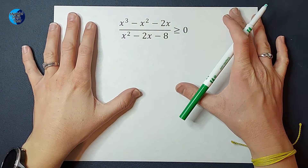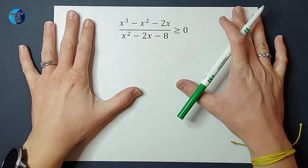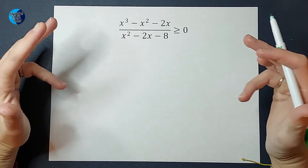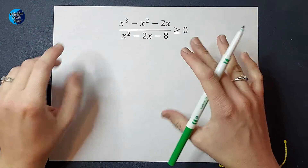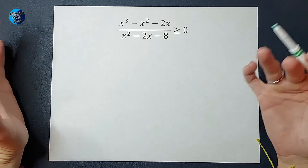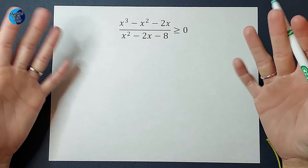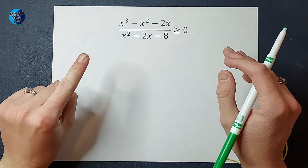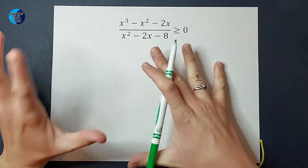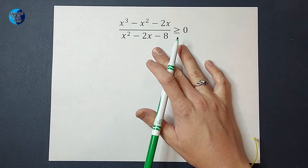Hey guys, we are going to solve this rational inequality. As we solve this, I'm going to give you some pretty specific steps to follow. You might be thinking you can do it but don't really get why it gives you the answer. Stick around to the end because I'm going to show you exactly why the steps we took worked, and it's probably more simple than you think.